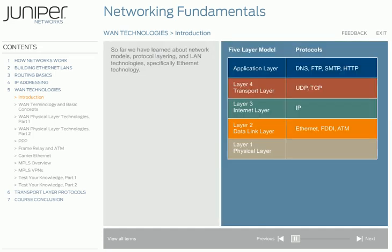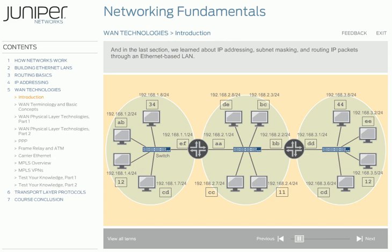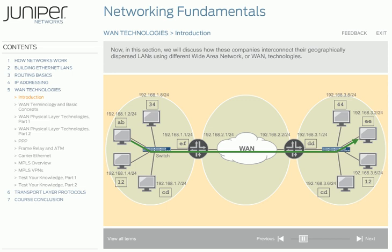So far, we've learned about network models, protocol layering, and LAN technologies, specifically Ethernet technology. And in the last section, we learned about IP addressing, subnet masking, and routing IP packets through an Ethernet-based LAN. Now, in this section, we'll discuss how these companies interconnect their geographically dispersed LANs using different Wide Area Network, or WAN technologies.